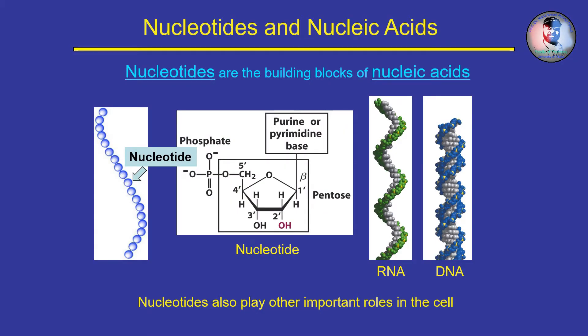Nucleic Acids are linear polymers that consist of monomers called nucleotides. Each nucleotide carries a pentose sugar, a nitrogenous base and a phosphate group.